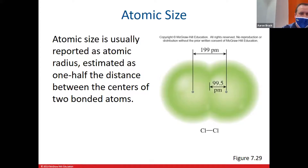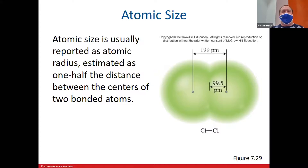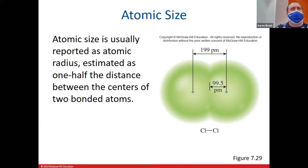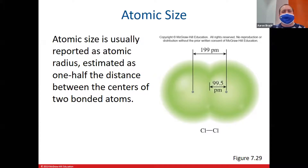Let's talk about atomic size. The official definition is based on when an atom reacts: how big is the chemical bond — what is the distance between the two nuclei of that bond — and then we cut that distance in half. That's the official definition, and it's a bit confusing.